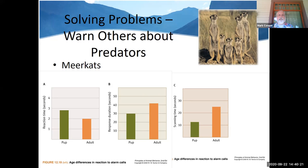Meerkats — if you've watched Meerkat Manor — are in the mongoose family, which is unusual for a social mongoose. They set up and watch for predators, giving warning and alarm calls. Adults tend to give these calls more than pups. Reaction time is quicker in the pups, but scanning behavior and response duration are more developed in the adults.